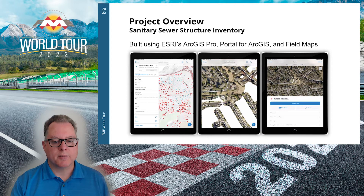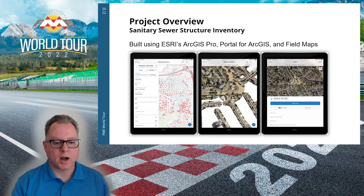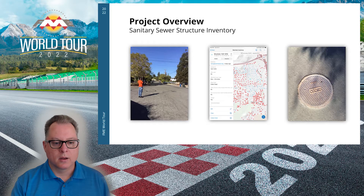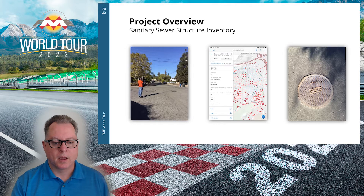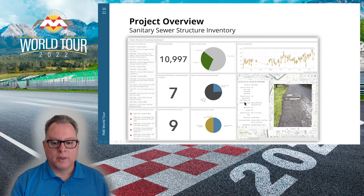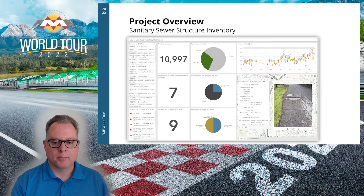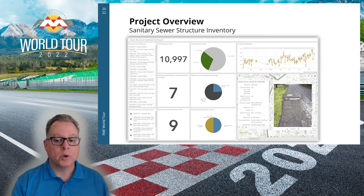Our group built a field data collection application using a combination of ArcGIS Pro, a portal for ArcGIS Enterprise, and the Field Maps application for iOS. Here you can see one of our field operations specialists collecting inspection data and taking photographs. We then built a dashboard in ArcGIS Enterprise to track progress and examine the collected data. Notice the map and pop-ups in the lower right corner, and particularly the photo attachments. We needed to pull those photos out of ArcGIS Enterprise so that we could load them into our document management system — we used Laserfiche.